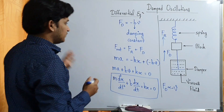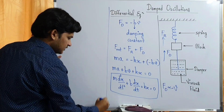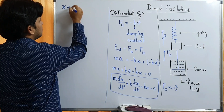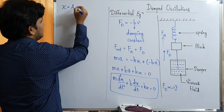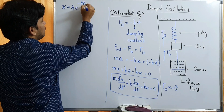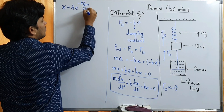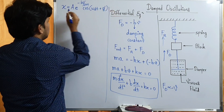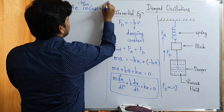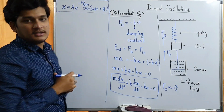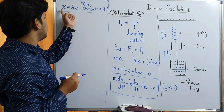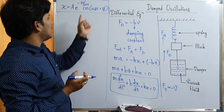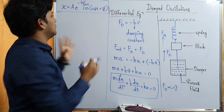When we solve this differential equation, the value of x which we get is: x = A · e^(-bt/2m) · cos(ωd·t + φ). Iska derivation apne syllabus mein nahi hai, you just have to remember this formula. Yeh jo displacement ka formula hai wo aapko yaad rakhna hai: A into e raise to minus bt by 2m, cos of omega d times t plus phi.